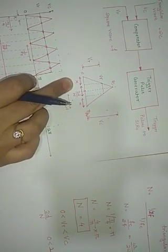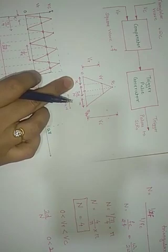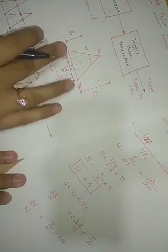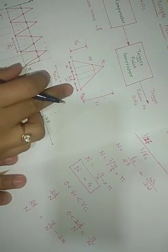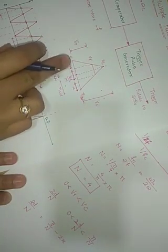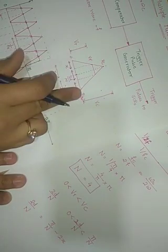Now here we can find out the value of X. The general equation for the pulse width is given as: 2d/N is equivalent to π/N minus 2X. This total duration is π/N, and X plus X equals 2X. When 2X is subtracted from π/N we get the pulse width, that is 2d/N.